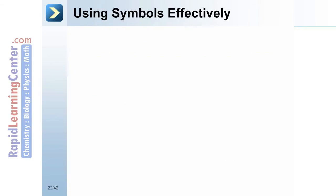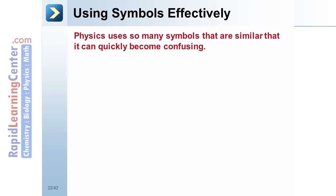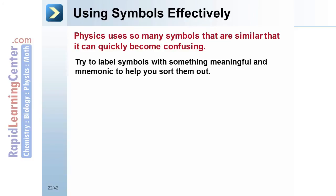Using symbols effectively. Physics uses so many symbols that are so similar, it can quickly become confusing. Try to label your symbols with something meaningful to you. This will help you associate them with what they represent.